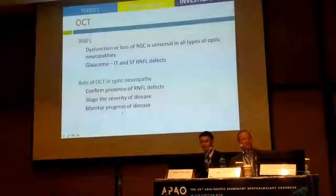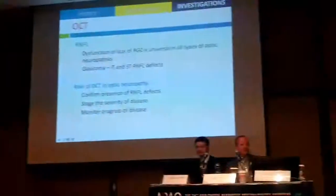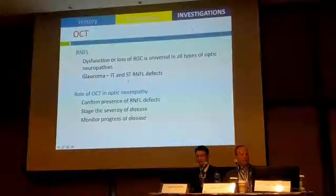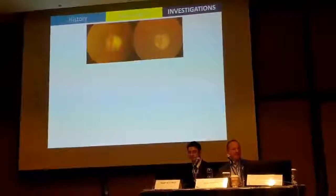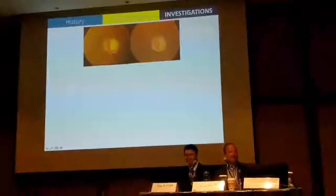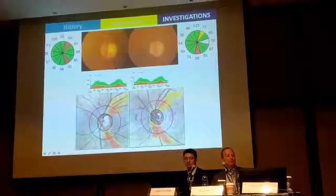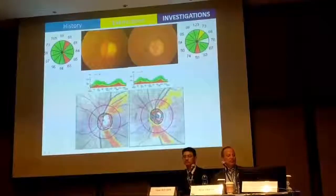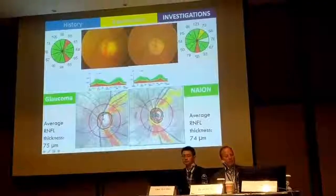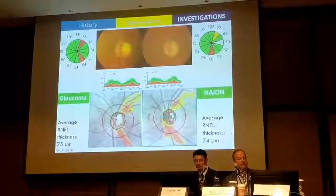OCT is very helpful. In glaucoma you can get inferotemporal and superotemporal retinal fibre layer defects. However, OCT alone will not give you the answer — for example, comparing a patient with NAION to one with glaucoma, if you just look at the peripapillary RNFL, the pattern deviation and average RNFL thickness can look exactly the same.